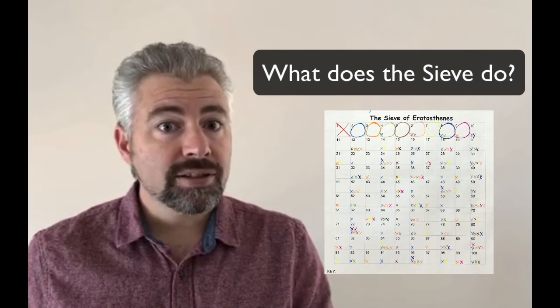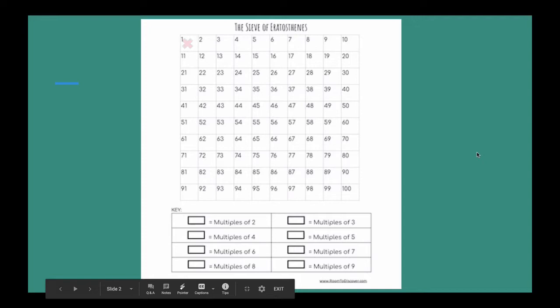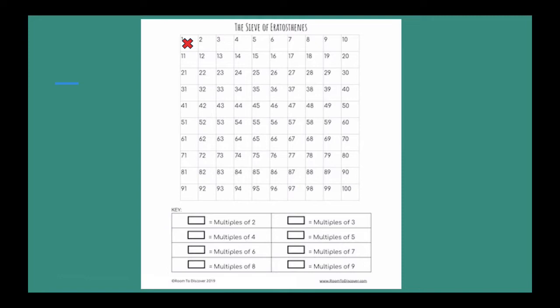So let's take a look at how the sieve works using a hundredths chart. And this will also help you see how you might use this in your classroom with your students. Okay. So this is what our sieve looks like. It's basically a hundredths chart. And then at the bottom we have a key.